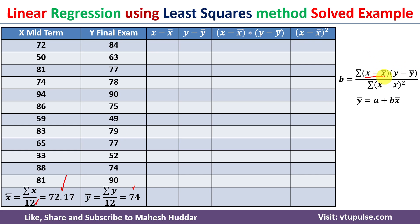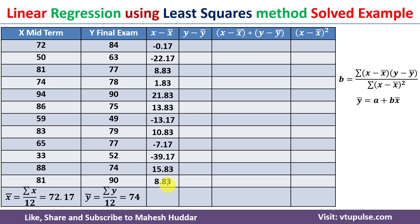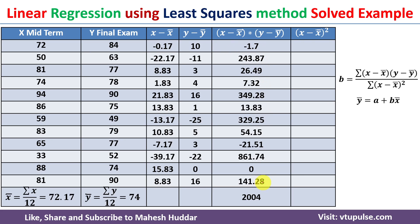Now we calculate (x minus mean of x) and (y minus mean of y) for each student. For example, x is 72 and mean of x is 72.17, giving minus 0.17. Similarly, 50 minus 72.17, and so on for all values. For y: 84 minus 74 equals 10. We calculate all other values similarly, then multiply the two columns together — for instance, minus 0.17 multiplied by 10 equals minus 1.7.